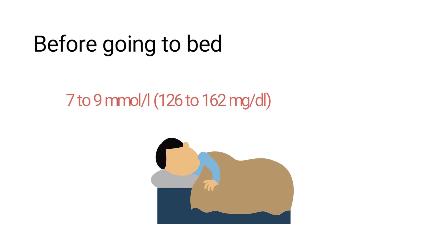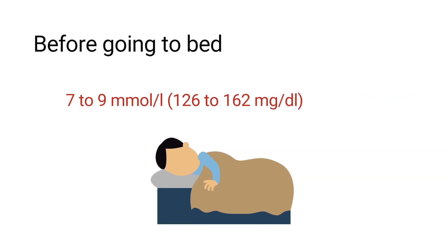Before going to sleep, blood glucose levels should be 7 to 9 millimoles per liter or 126 to 162 milligrams per deciliter.